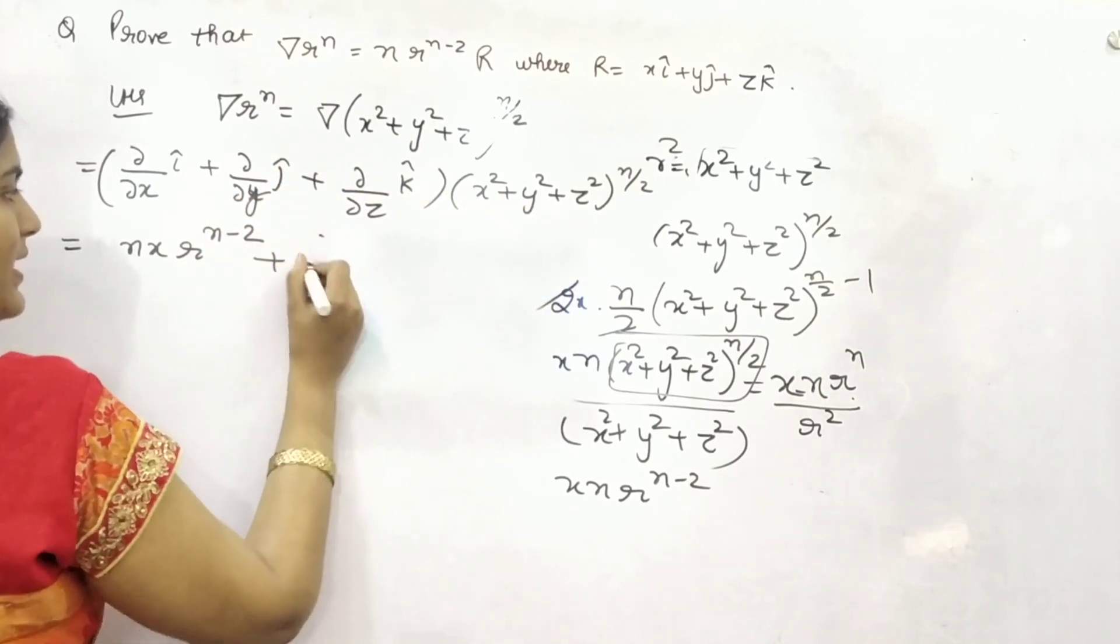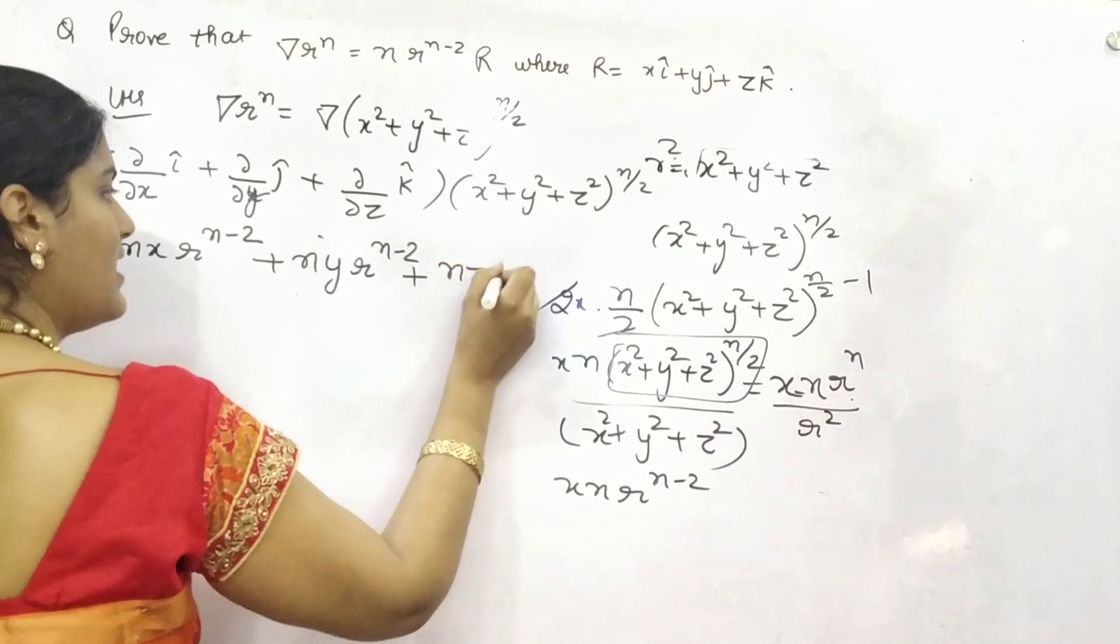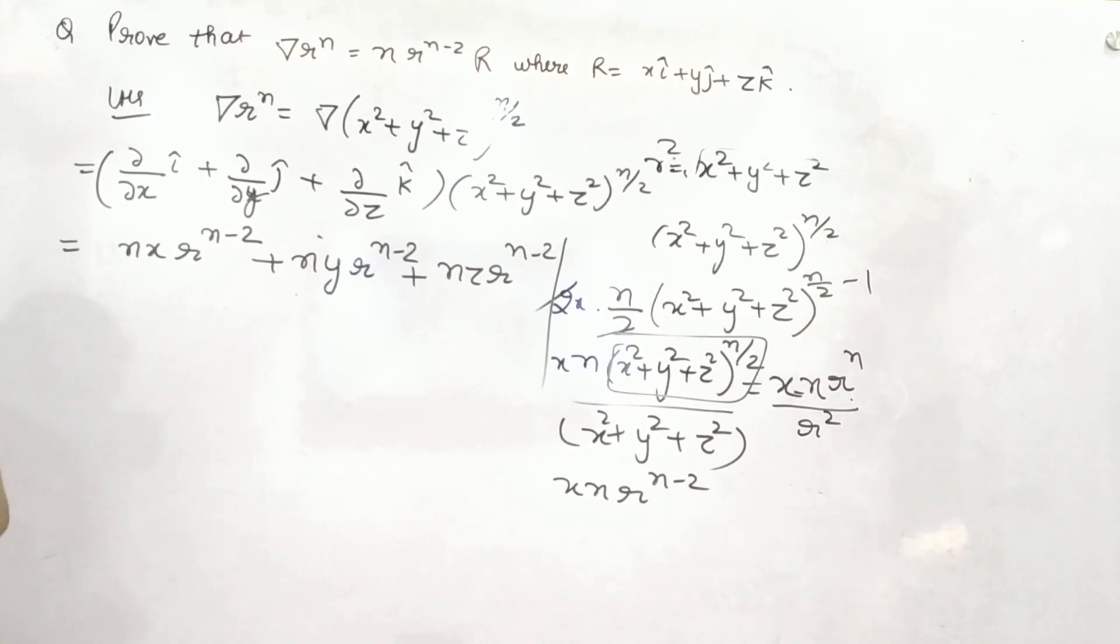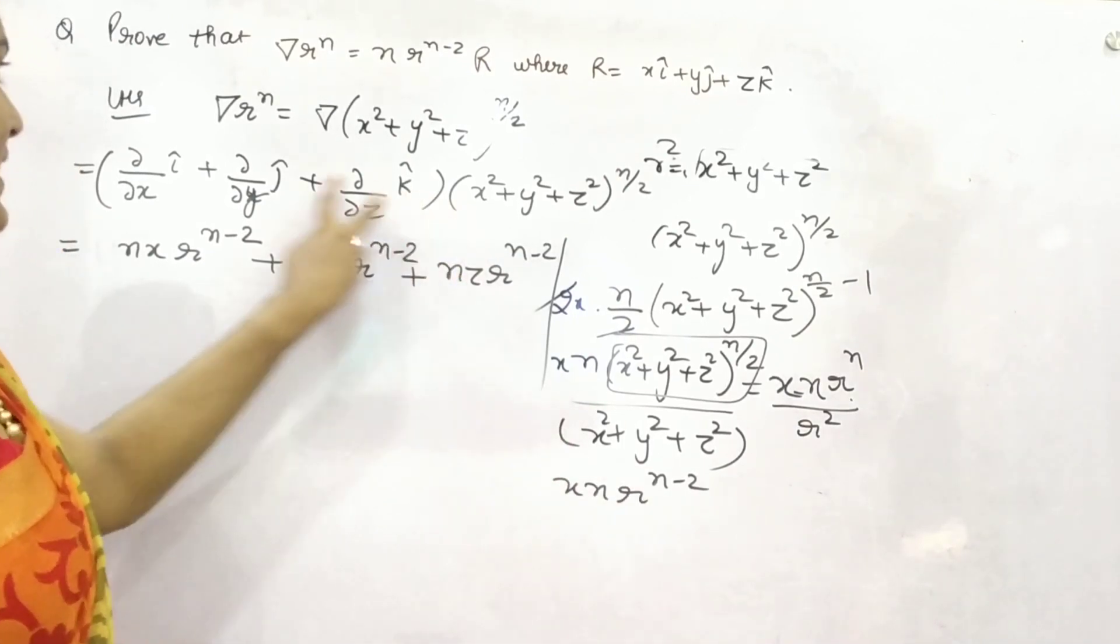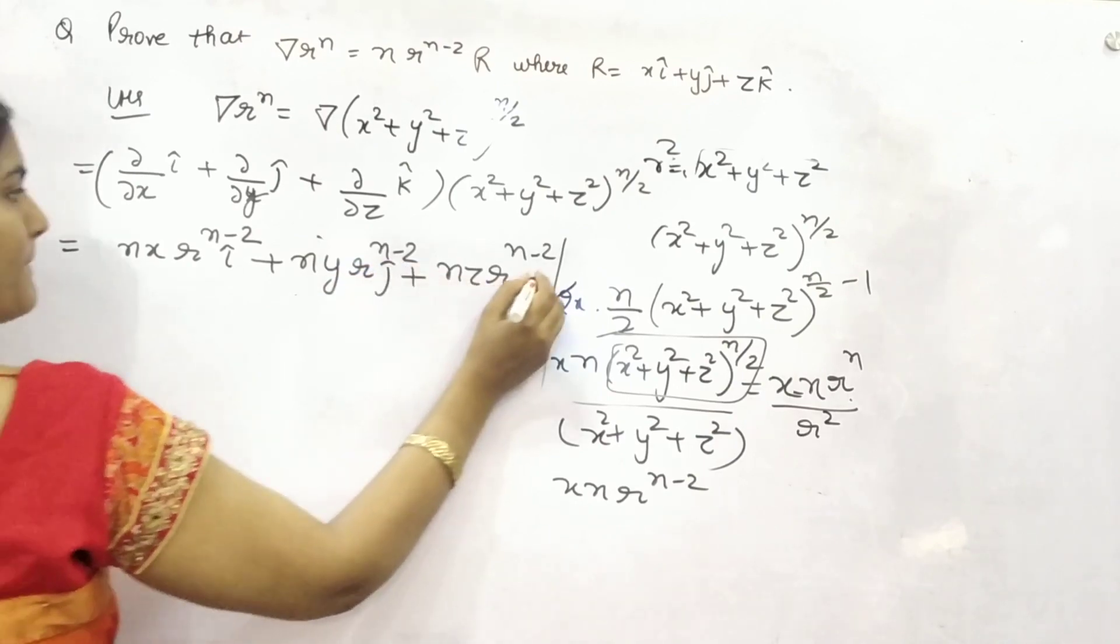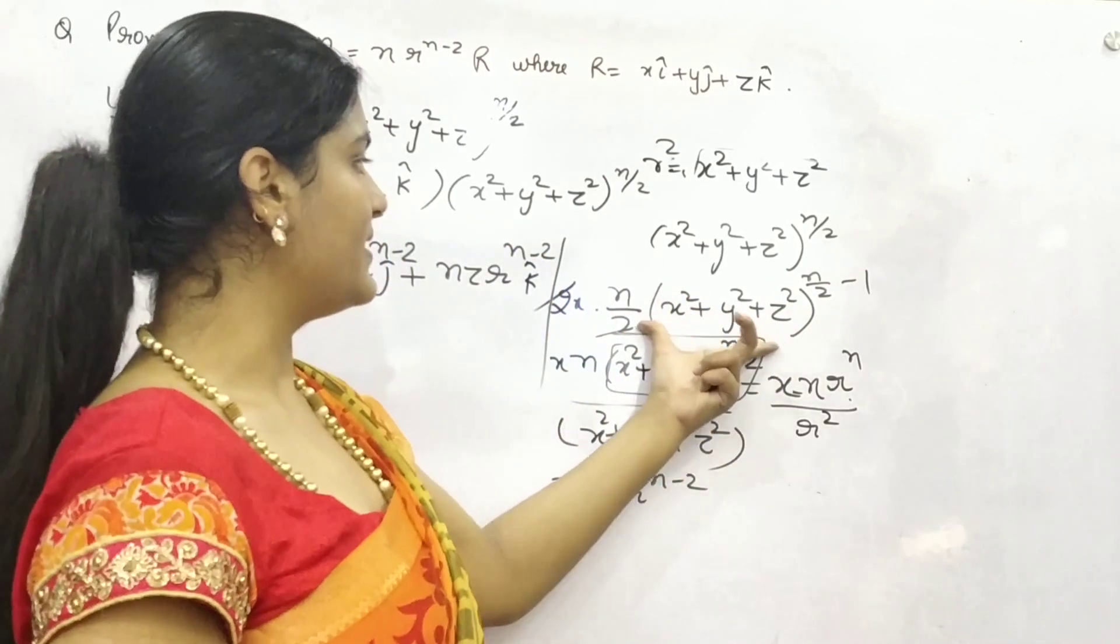Similarly, with respect to y, it will be Ny, R raised to power N minus 2. And, with respect to z, Nz, R raised to power N minus 2. Correct? This is only if i is not there. i, j, k are still there. We have only solved this bit. Correct?